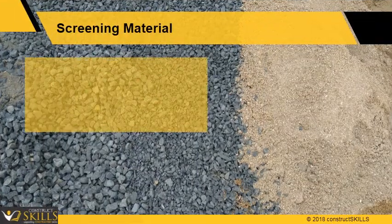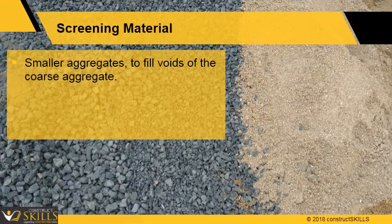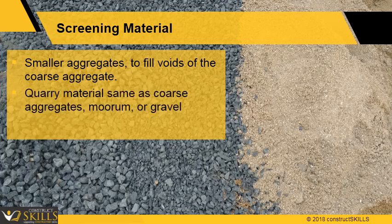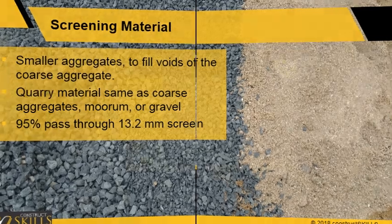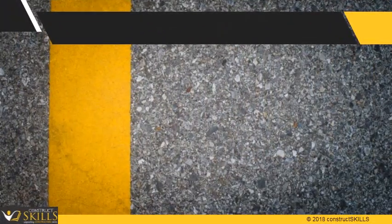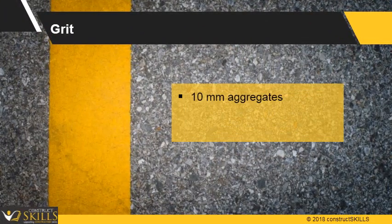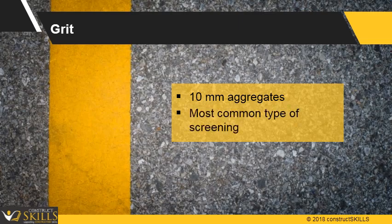Screening material: screening to fill voids in the coarse aggregate shall generally consist of the same material as the coarse aggregate. Murum and sand gravel can also be used. 95% of the material should pass through a 13.2 mm screen. Grit: these are 10 mm aggregates and the most common type of screening.